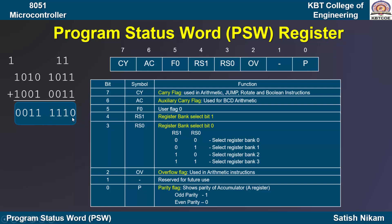Counting the ones in the result: there are 5 ones in the accumulator. Since 5 is an odd number, the parity flag will be 1.